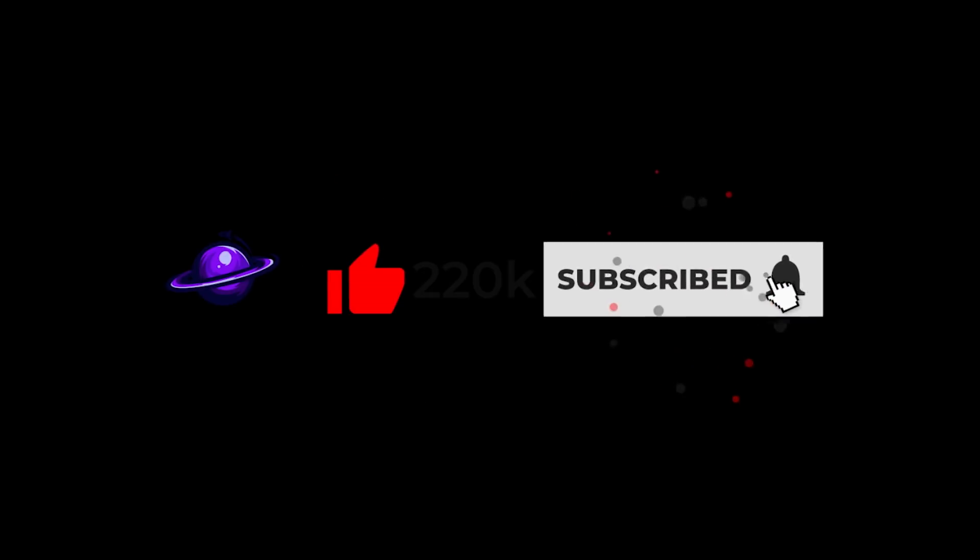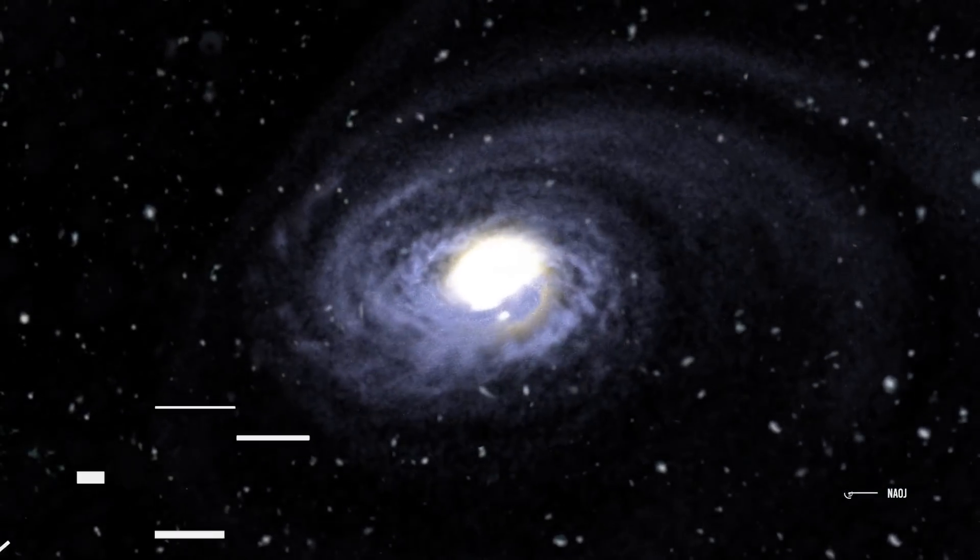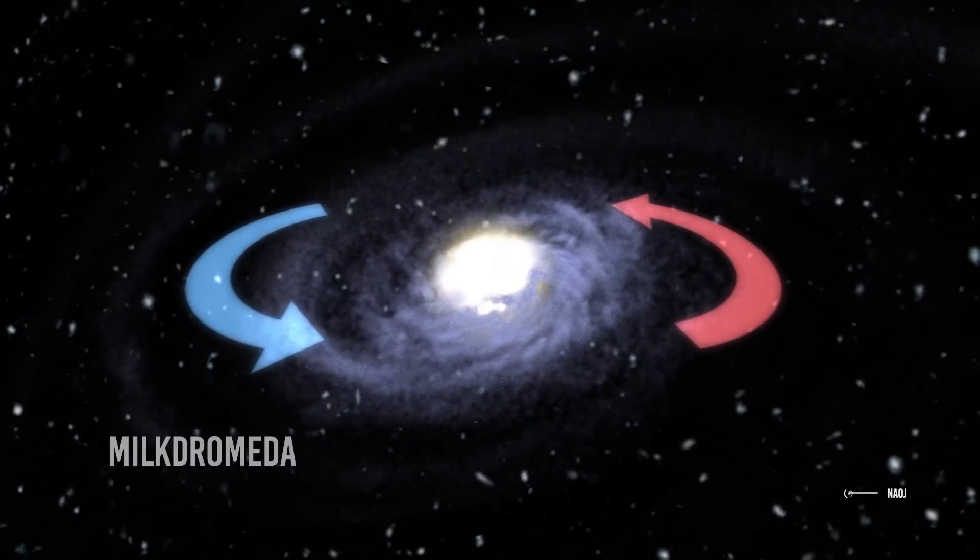An elliptical galaxy is a type of galaxy with an approximately ellipsoidal shape and a smooth, nearly featureless image. The study authors have named this new galaxy Milkdromeda. What would you call it? Let us know in the comments below!